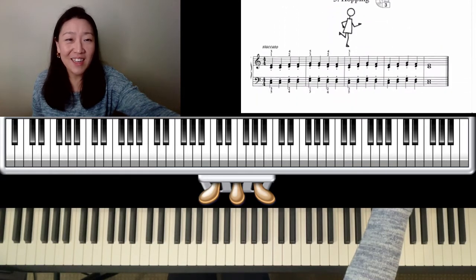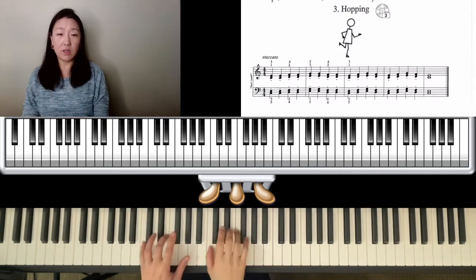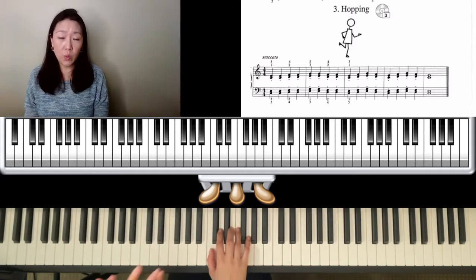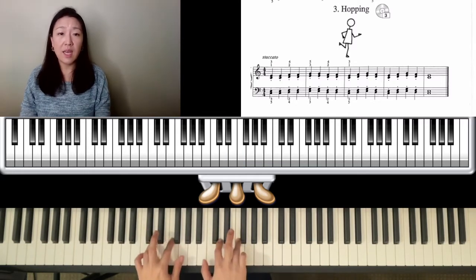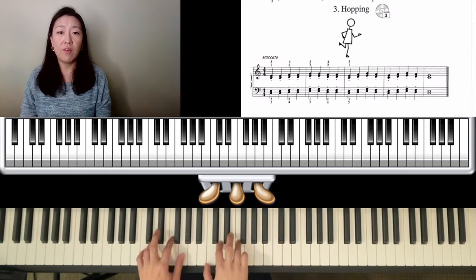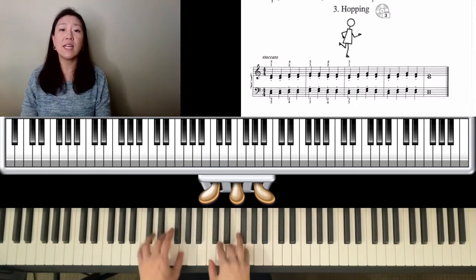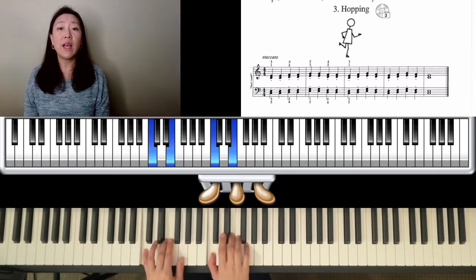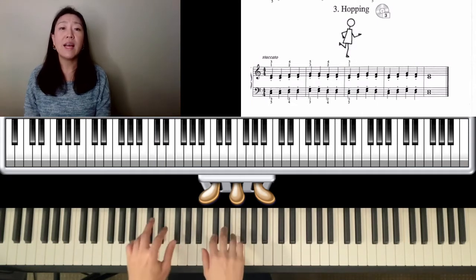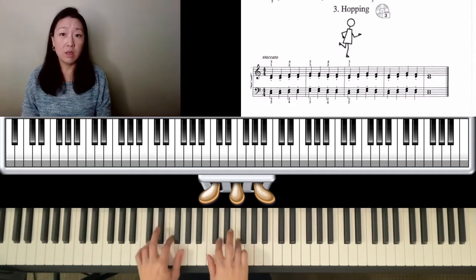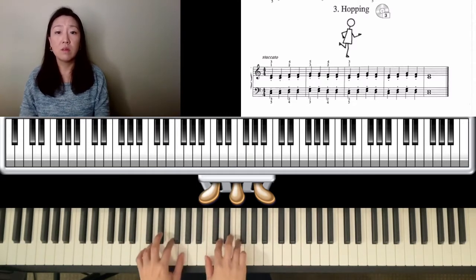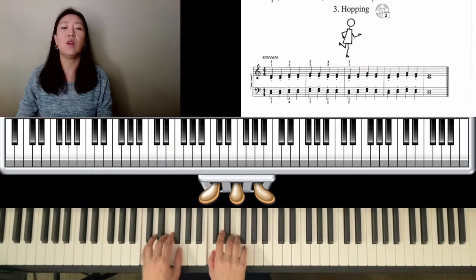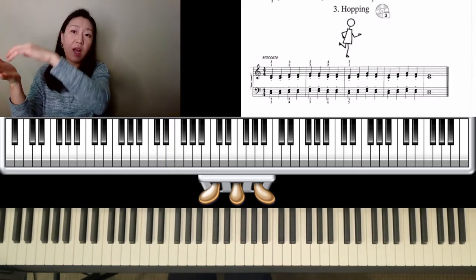Let's look at Hopping. We have thirds grouped together and they're all staccato, still in the same C position. D-F, D-F, E-G, E-G. If you do it slowly like this, you can move your arms up and down, just make sure they're relaxed. Relax in between.